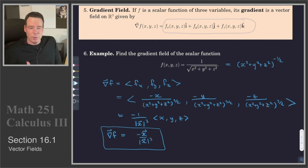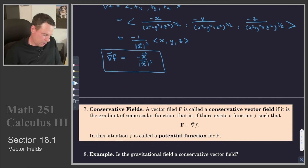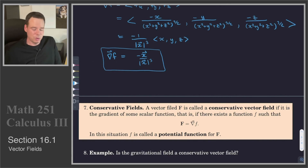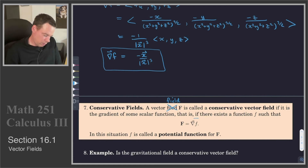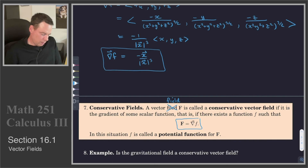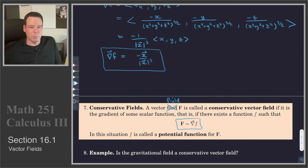Vector fields that arise as gradients of scalar fields are known as conservative vector fields. The definition: a vector field F is called conservative if it is the gradient of some scalar function — that is, if we can write F = ∇f for some scalar f. In that case, f is called a potential function. Conservative vector fields are important in physics — they underlie conservation laws — and they also have nice mathematical properties that will simplify the calculus of vector fields.